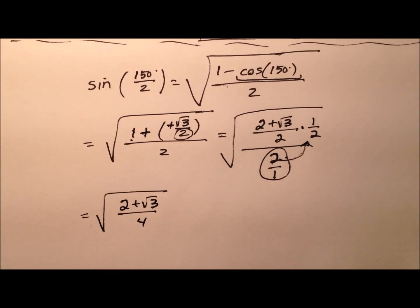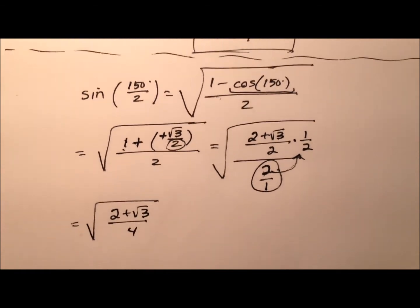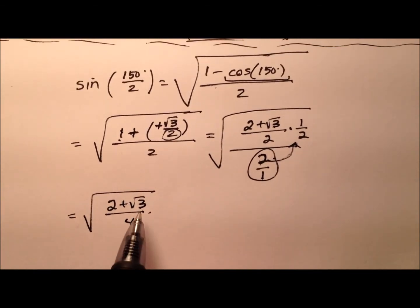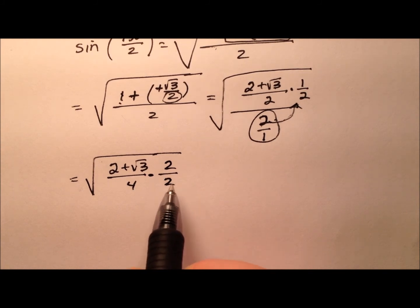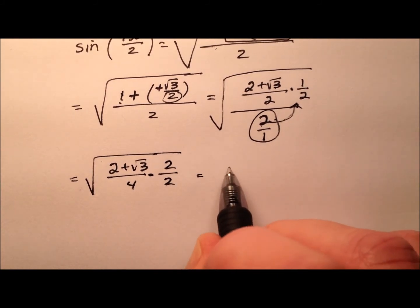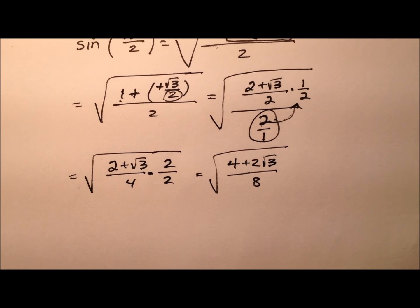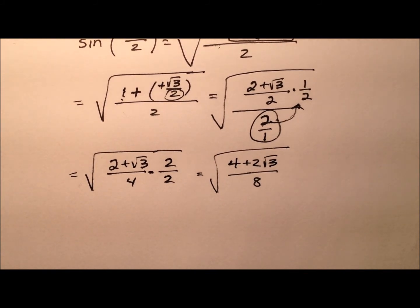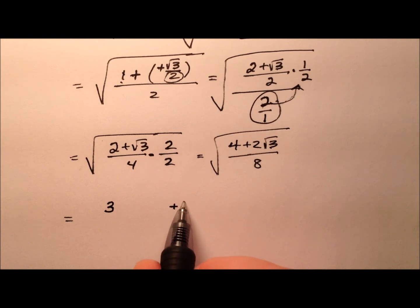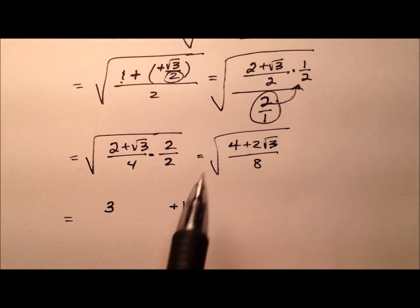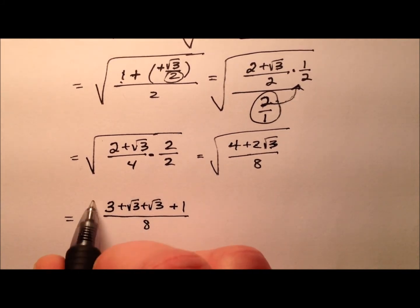This square root expression looks very different from the earlier result, so let's see how we can eliminate the nested radical. I'll multiply inside the radical by 2 over 2, giving us 4 plus 2 radical 3 all over 8. Now I'll rewrite the numerator: instead of 4, write 3 plus 1, and instead of 2 square roots of 3, write square root of 3 plus square root of 3. All of that is over 8, underneath the radical.